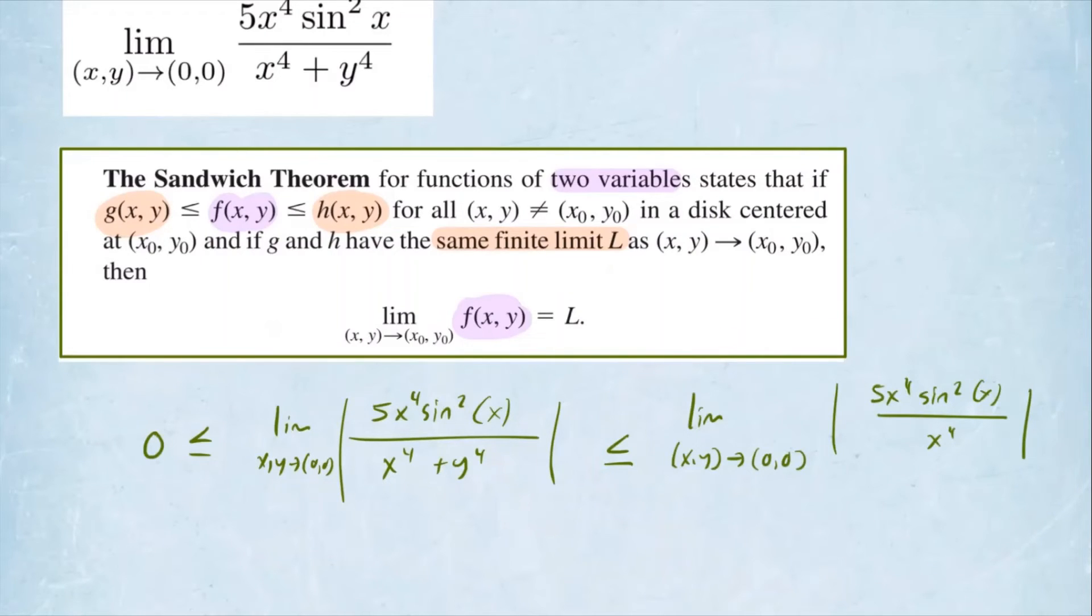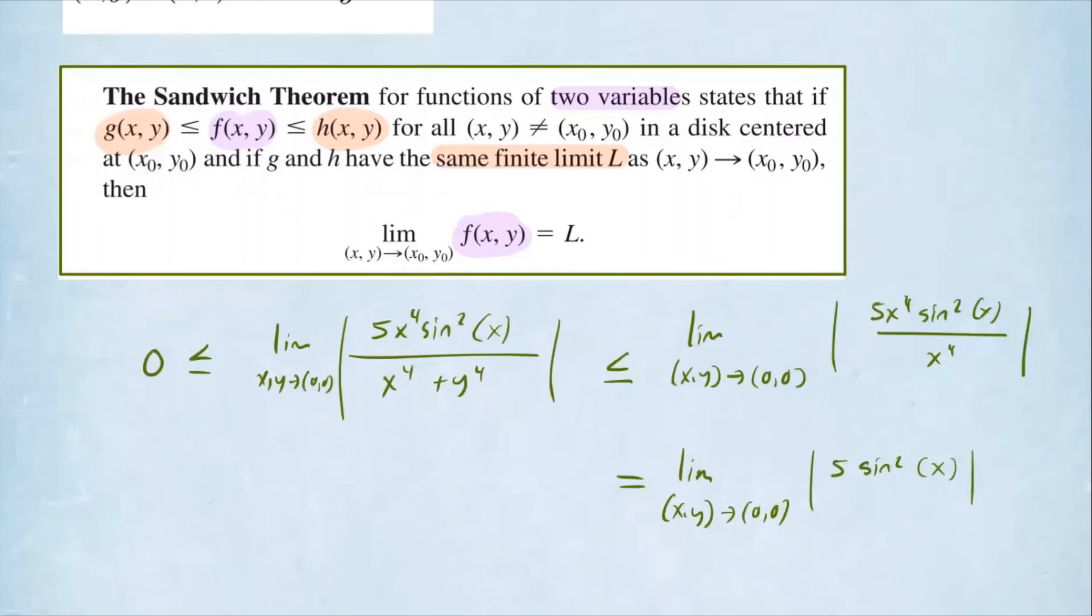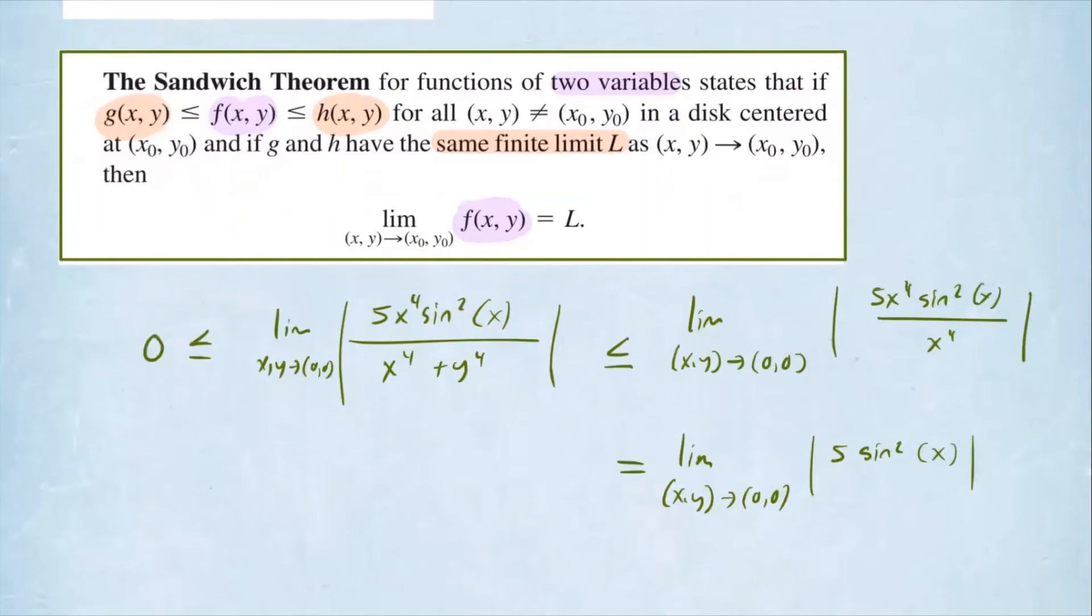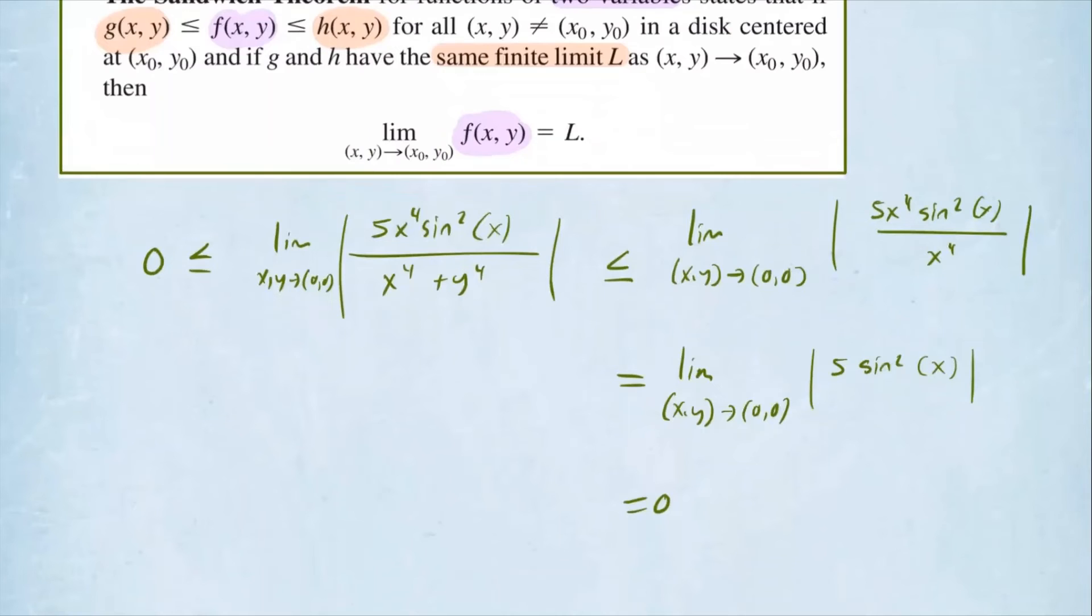Now what is this limit? Well, if you simplify the terms inside the absolute value, so we have the limit as (x, y) approaches (0, 0) of, so this is going to be 5sin²(x). And now if you try to approach as (x, y) goes to 0, we know sine of 0 is 0, so this limit is 0. So there you go.